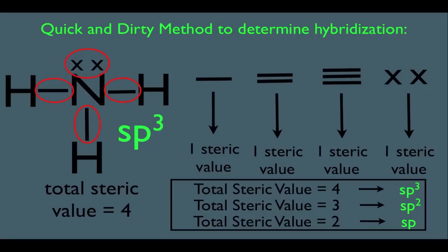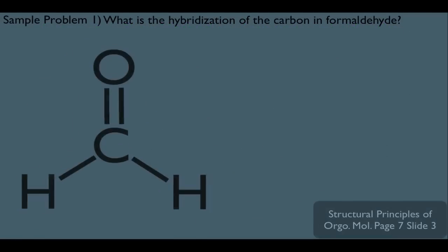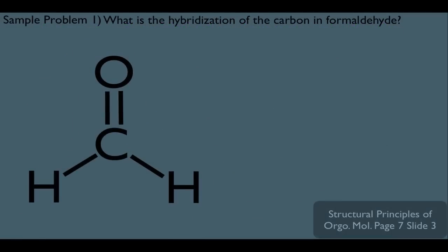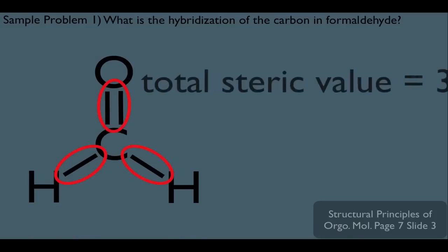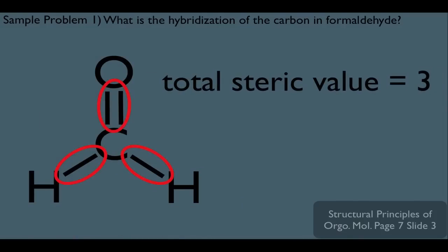Let's look at a sample problem to make sure you got this. What is the hybridization of the carbon in formaldehyde? Let's first determine the steric value. It has one double bond worth one point, a single bond worth another, and another single bond, giving a total steric value of three. A total steric value of three means that carbon is SP2 hybridized.